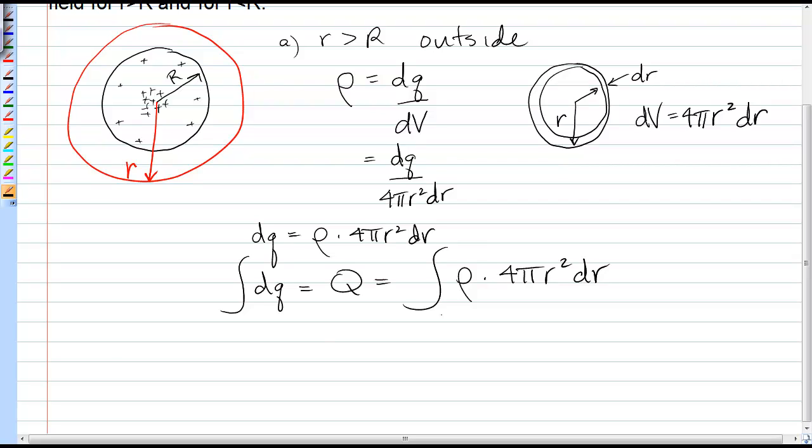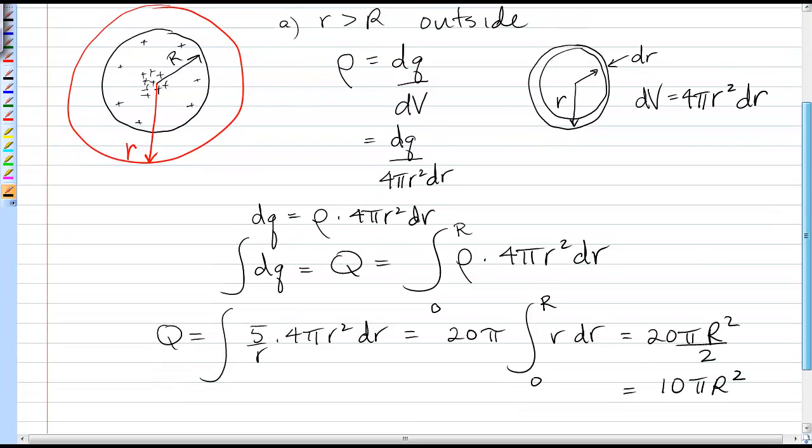The limits of integration: in this case, even though we want the field outside the sphere, we have to stop at the edge of the sphere, capital R, because there's no charge past that point. Substituting in for ρ, which equals 5/r, we have 5/r times 4πr²dr. Taking 20π out of that integral, we're left with r dr from 0 to R, which gives 20π times r²/2, or 10πR². That's the total charge on that sphere.